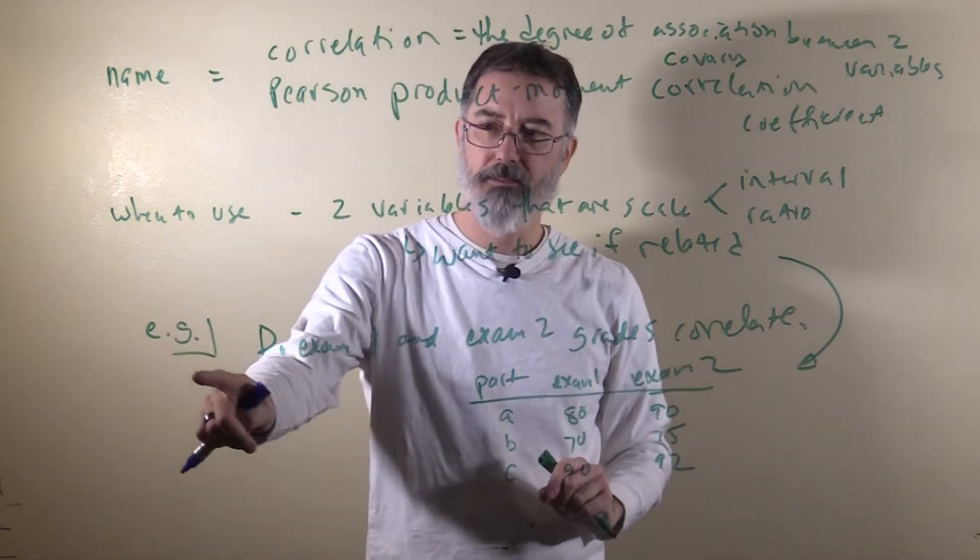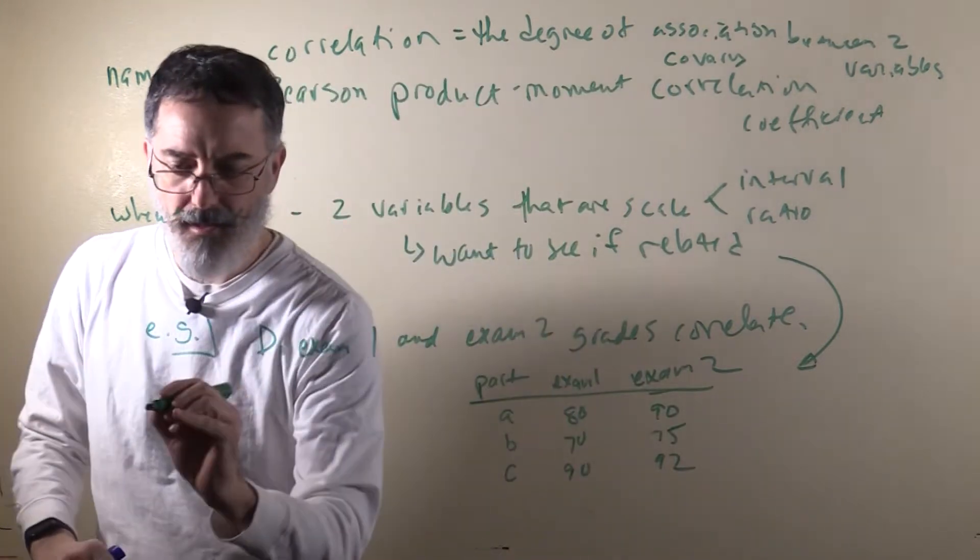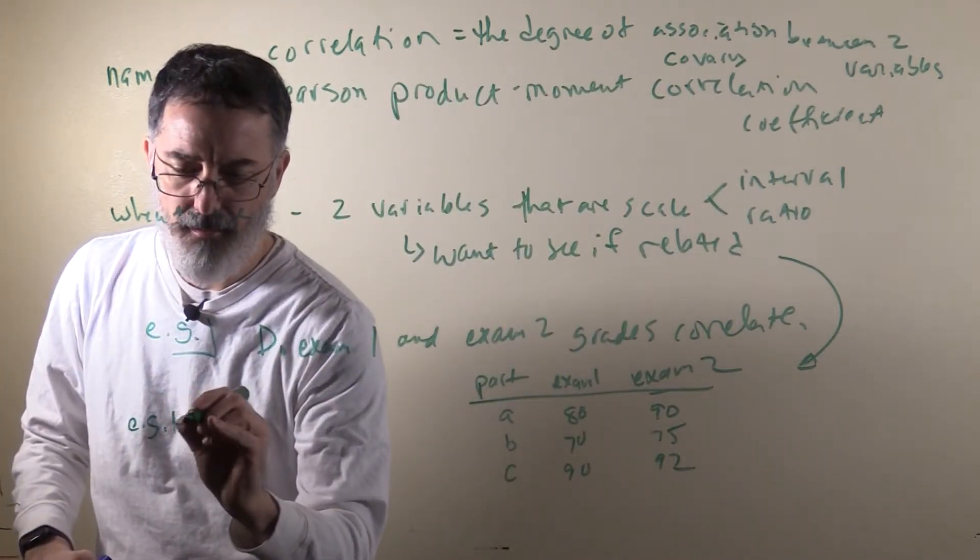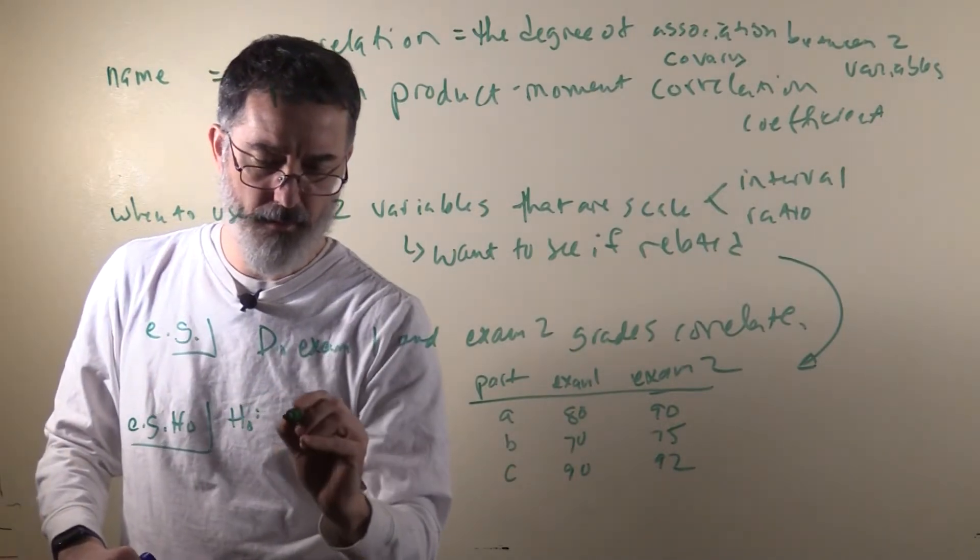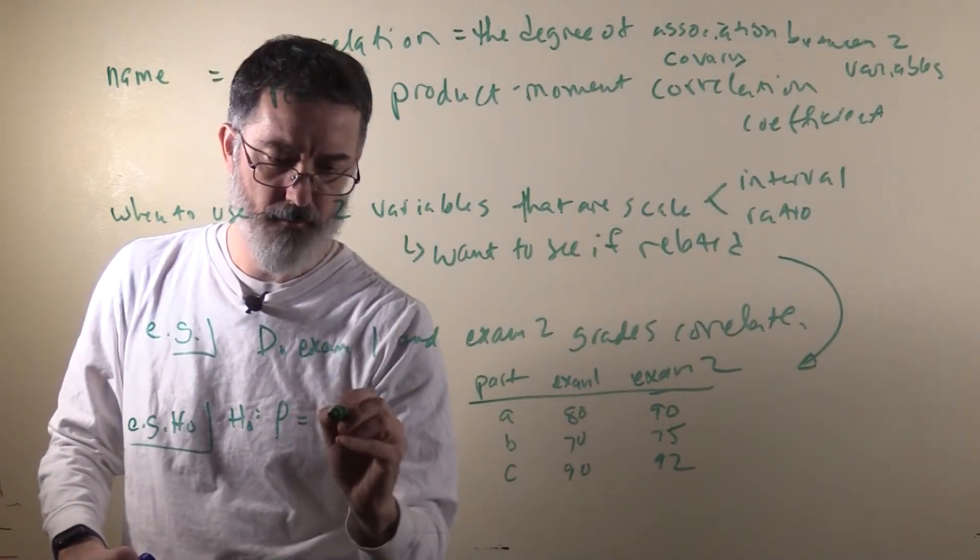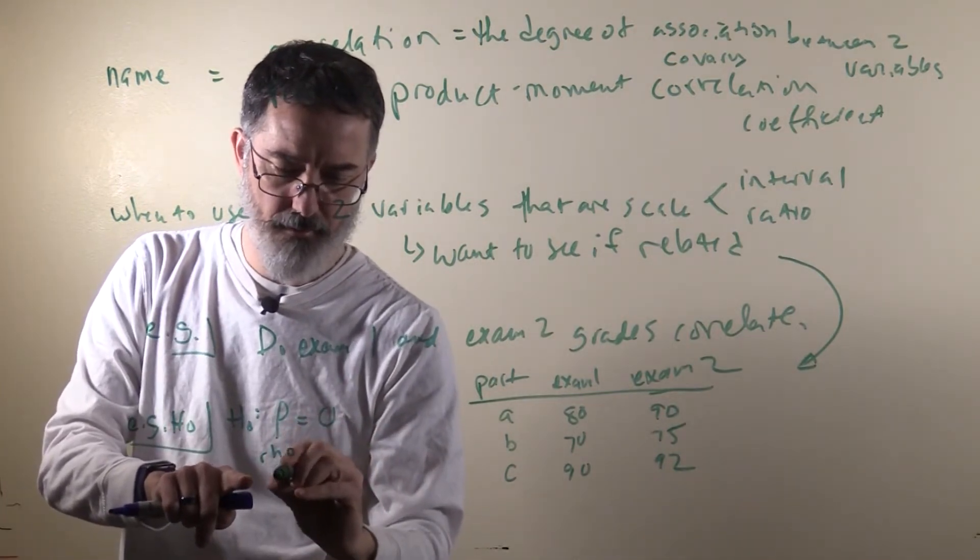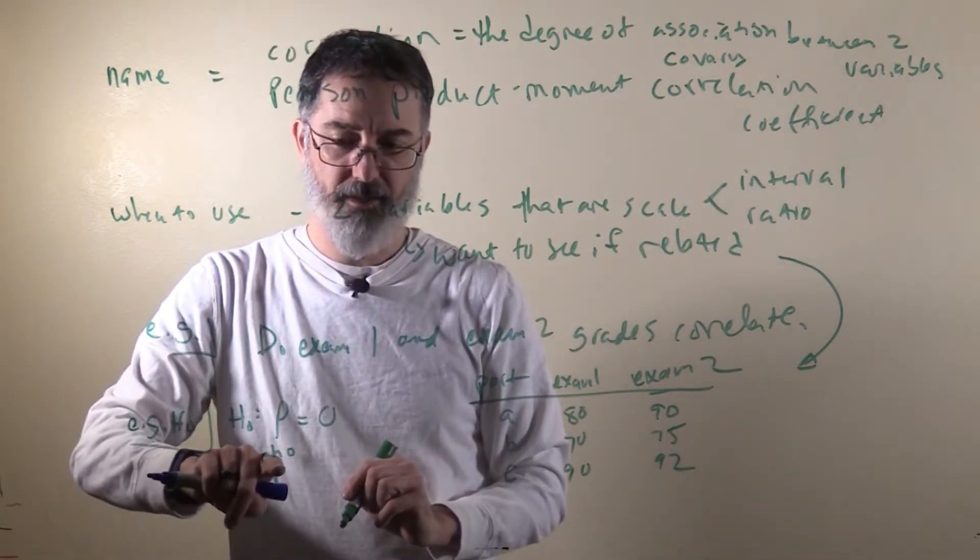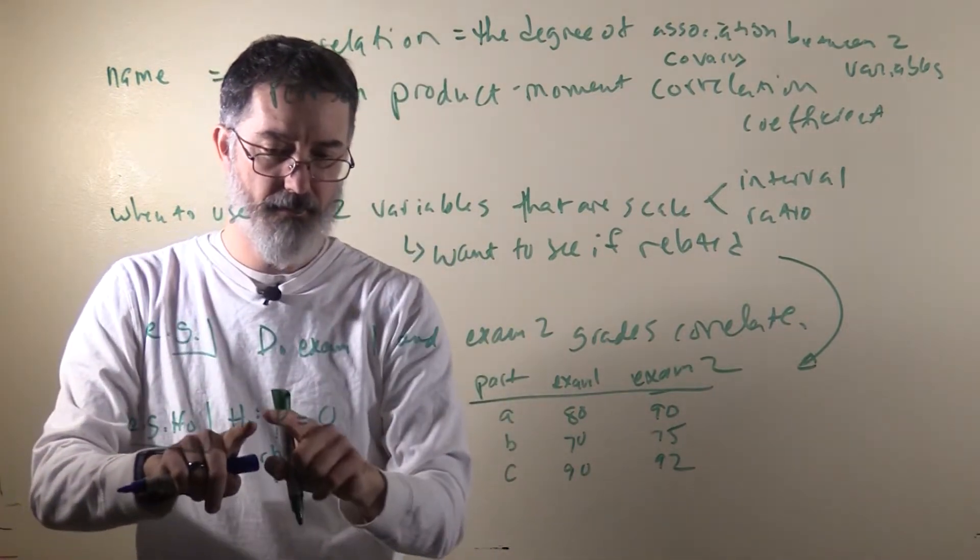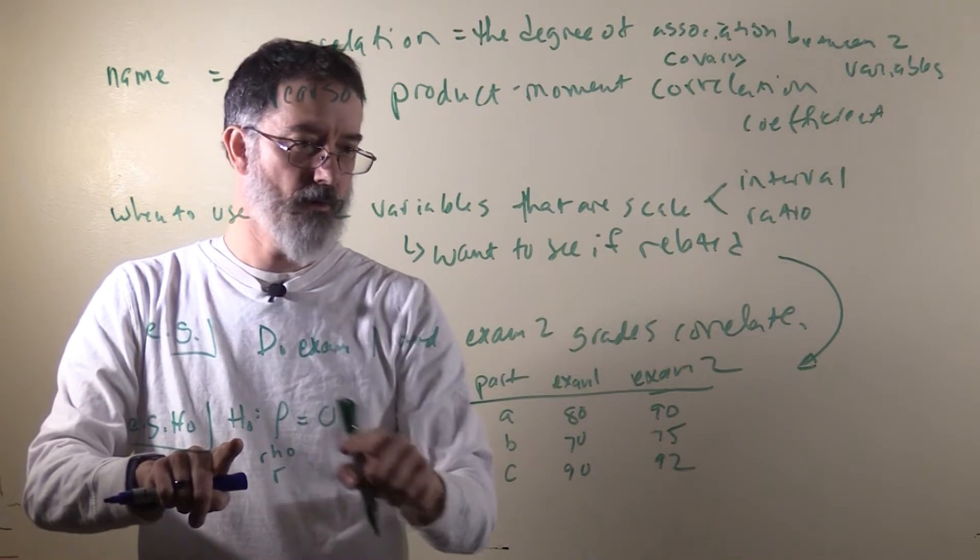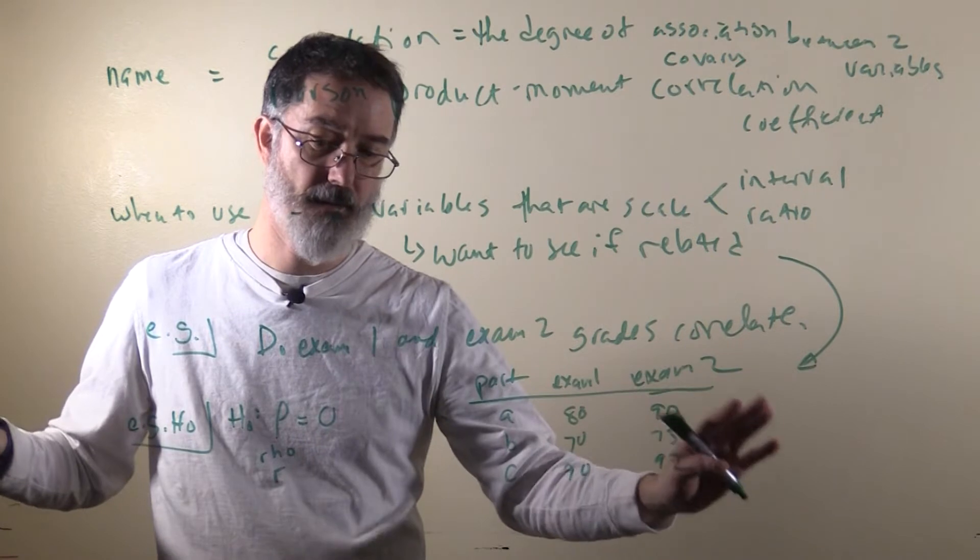This is the example: do exam 1 and exam 2 grades correlate? The example null hypothesis for this would be H sub not colon rho equals zero. Rho is the correlation coefficient R, but for the population. This null hypothesis says that the correlation between exam 1 and exam 2, that there is not one at the population level.